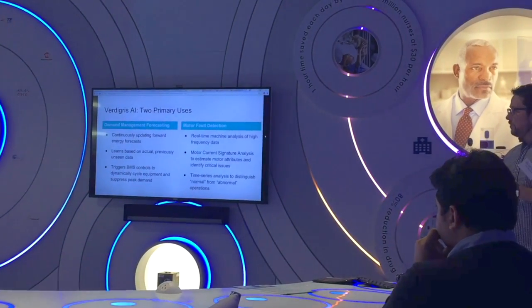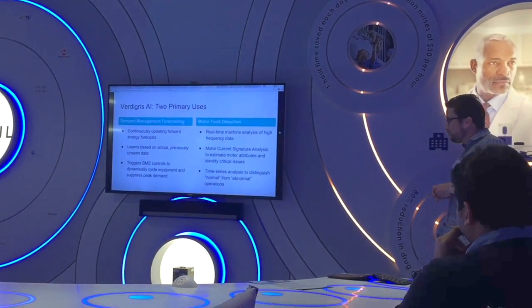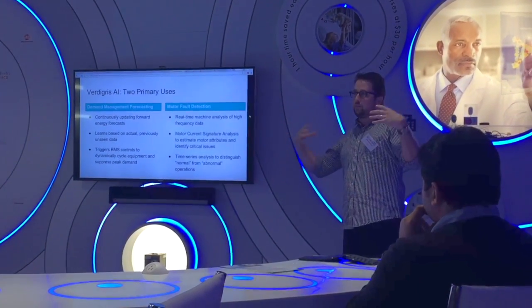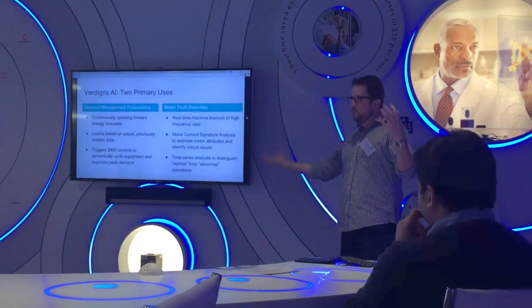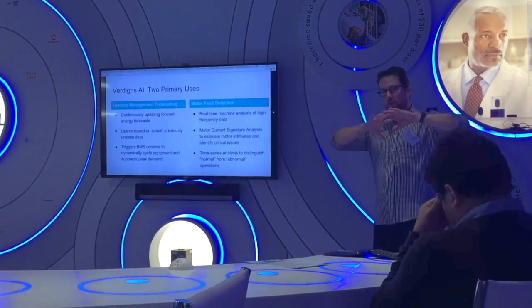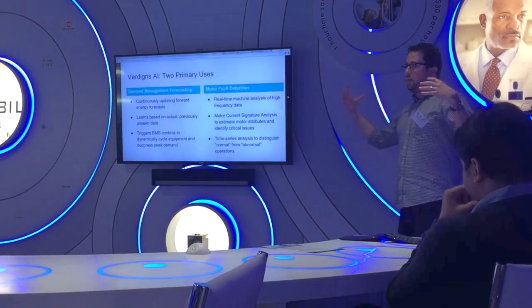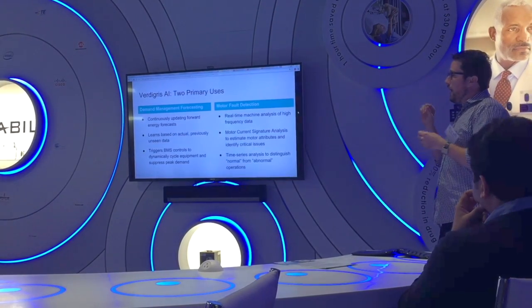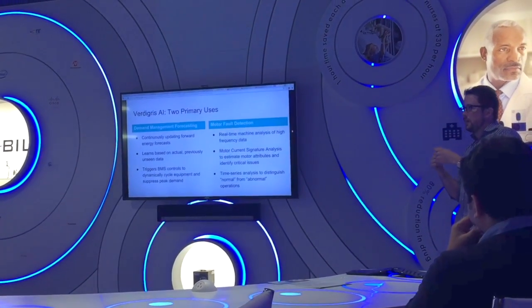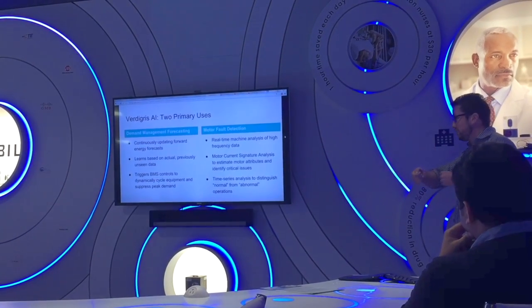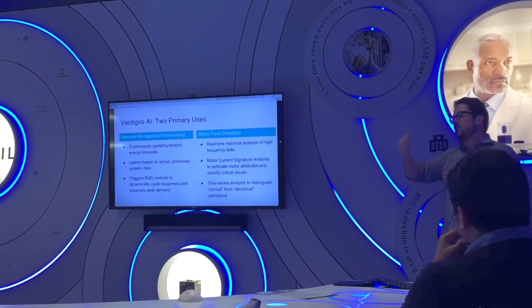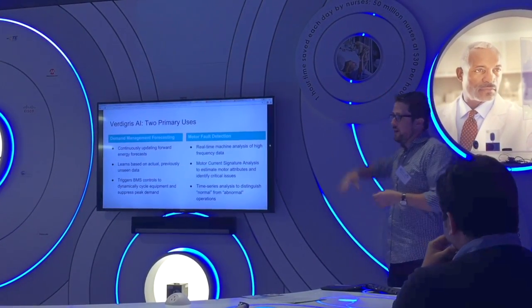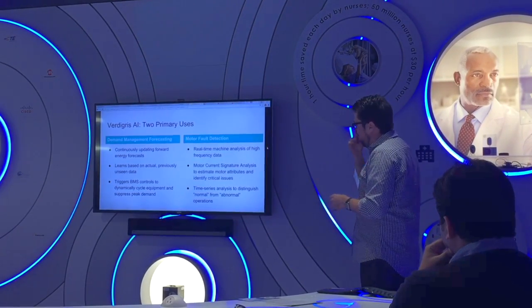And so what we can do with that is using the AI's two primary uses: demand management forecasting and motor fault detection. For demand management, we're using this huge amount of very fast, very rich granular data that we're pulling off of all these different devices in the building to construct a really dynamic forecast of what we think is going to happen. We currently forecast every hour and we can use that to do all sorts of things around demand management in terms of tying into a building management system or building automation system and actually affecting changes to the operational profile of the building before you hit those spikes and before you cross those demand thresholds to actively save money.